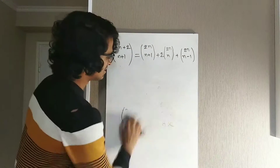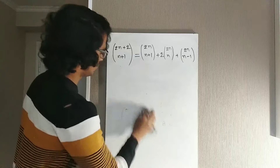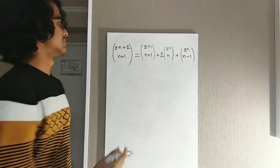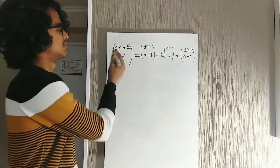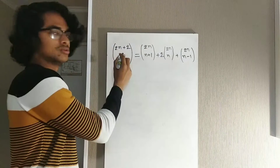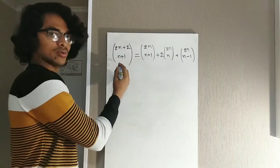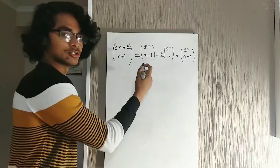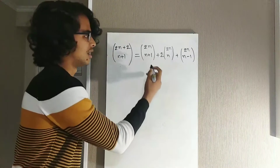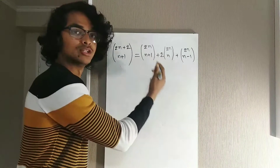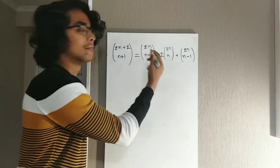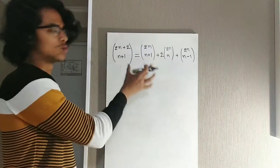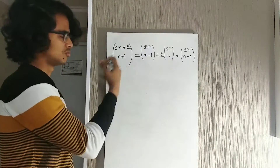So first let me read the problem. The identity we have to prove is: C(2n+2, n+1) equals C(2n, n+1) plus 2 multiplied by C(2n, n) plus C(2n, n-1). We have to prove that this identity holds.